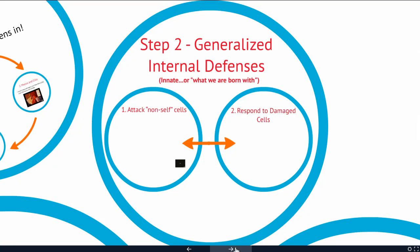Once a pathogen makes it into our body, our immune system uses what are called generalized internal defenses. Using the analogy where pathogens are bad guys and our immune system is like a police force, our generalized internal defenses are the general response — we're looking for anyone committing a crime, not specifically looking for specific pathogens.